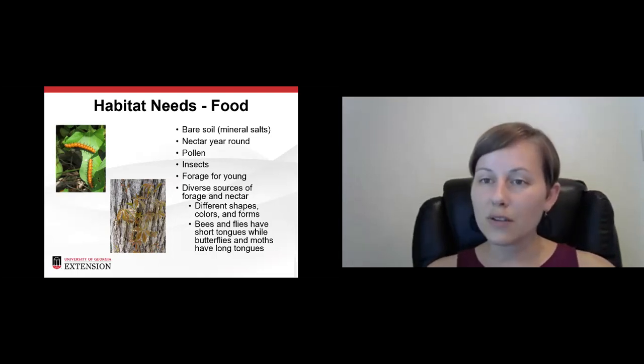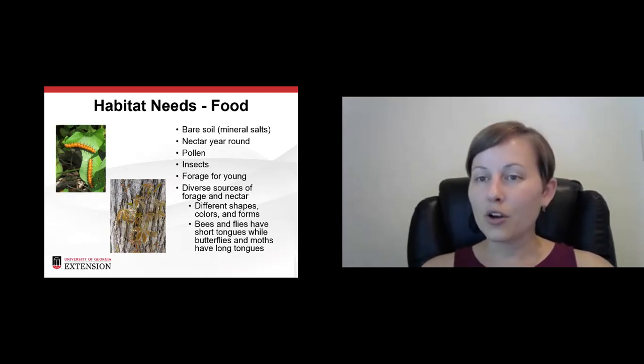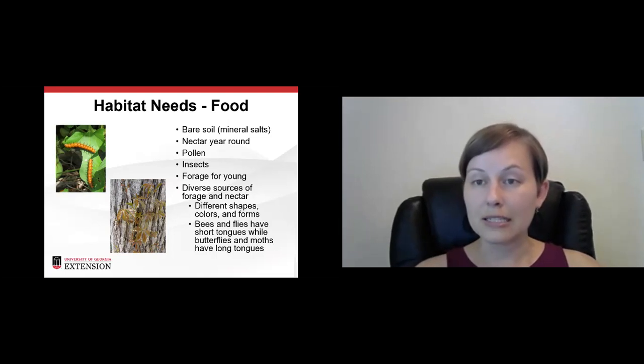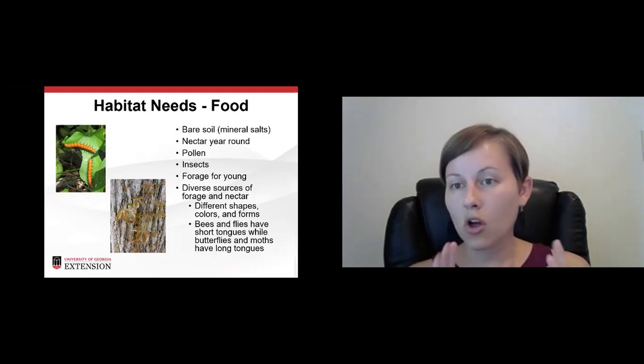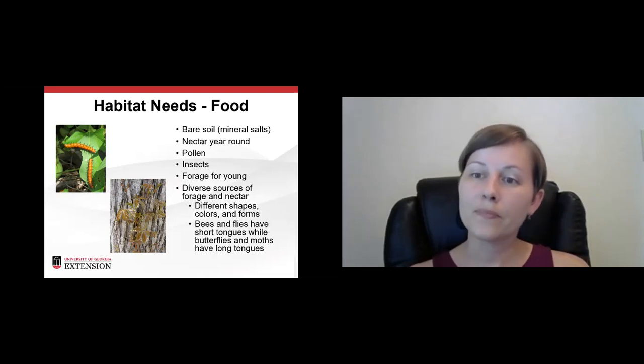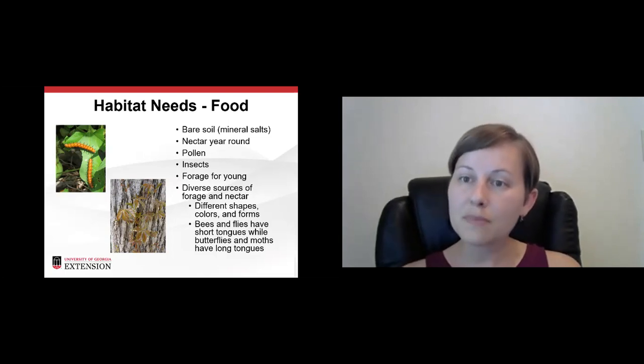So having those native plants and preferably not the cultivars of them is a really important key to keeping that food web going, whether it's for pollinators or for wildlife or for both. It's also really important to have diverse sources of forage and nectar. So different shapes, colors, forms, growth habits of plants. This is important too, because if you think about it, if you're looking at pollinators, for instance, if you have bees or flies, they have short tongues. So they're going to need flowers that are a little more compact, more accessible that way. Whereas butterflies and moths have a long proboscis. So they're going to need things that are tubular in order to feed in them. So having different flower shapes as well and different plant structures is also important.